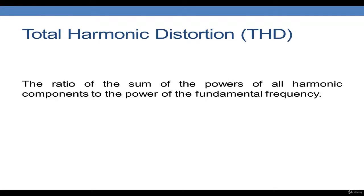Total Harmonic Distortion, or THD, is a quantity used to measure distortion in a power system. It is the ratio of the sum of the powers of all the harmonic components to the power of the fundamental frequency. Having covered the fundamental theory of harmonics, we will now enter ETAP to conduct a harmonic analysis.